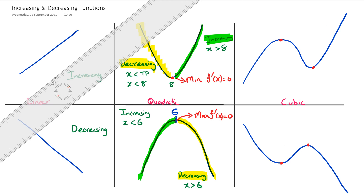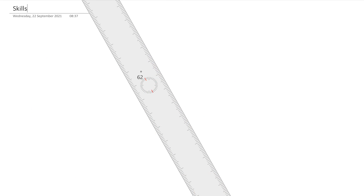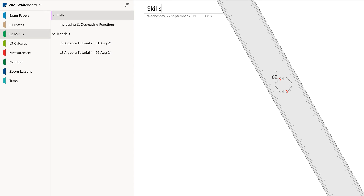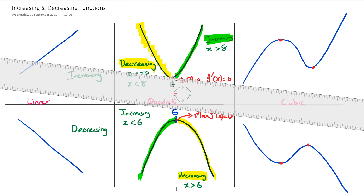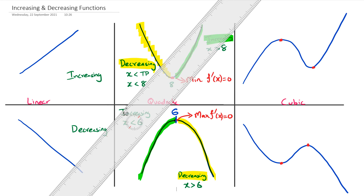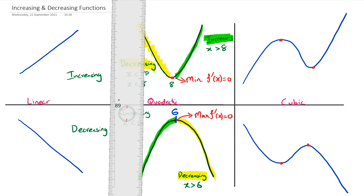Something to remember: with straight lines you're always going to get either increasing or decreasing. When you come to a parabola you get decreasing then slowly increasing. Next we get to cubics, and with cubics there are two important points to remember where the gradient equals zero — we have a local max point and a local min point. With a negative cubic we also get a local max and local min.